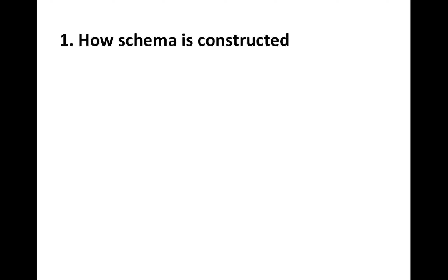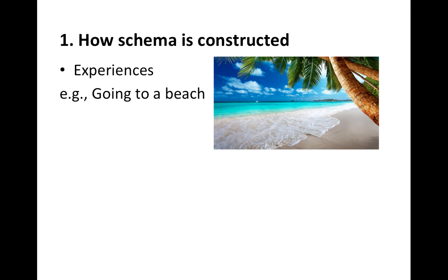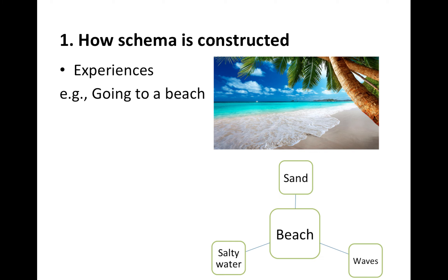First, let's see how schema is constructed — it is through experiences. All you do and experience, you are creating schemata. The richer your experiences are, the more developed your schemata are. For example, if you go to a beach, you can form a schema on a beach: there is sand, waves, and the water is salty. Physically going to a beach is more effective than just looking at a picture of it, because you can smell and taste the salty water and feel the waves and sand. So you are processing information using all five senses, and your schema becomes more developed and sophisticated, containing various types of information from various sources.